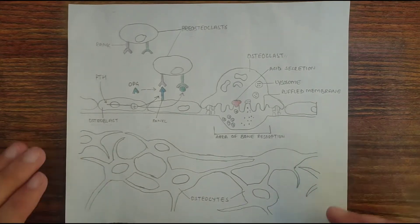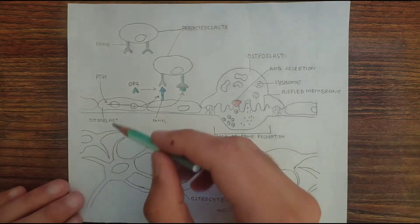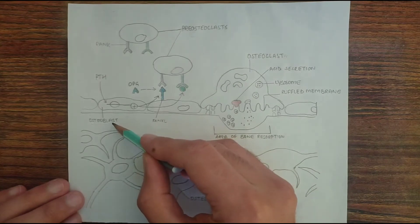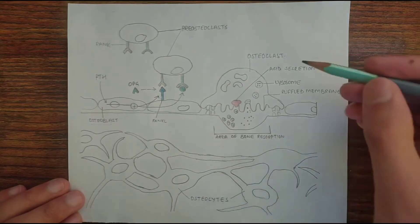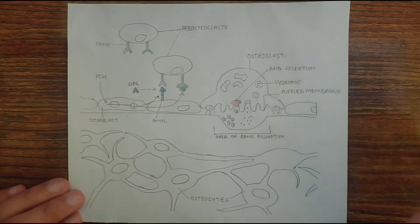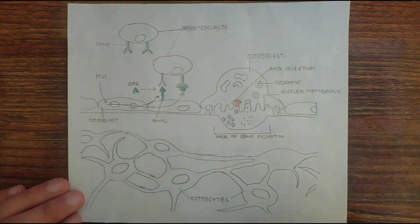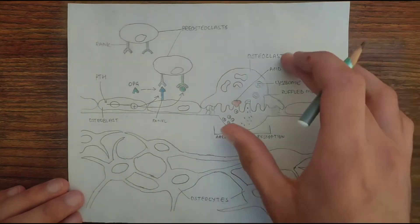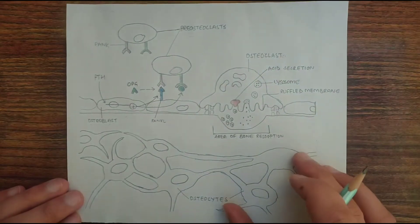In this diagram we have got three different types of bone cells. The first one is the osteoblast, second is the osteocyte, and third one is the osteoclast. So these are the three different types of bone cells.